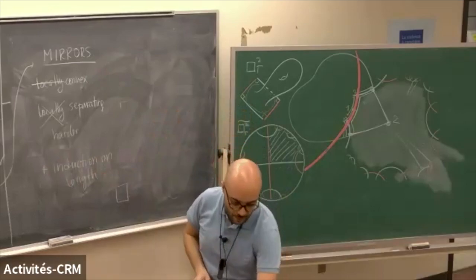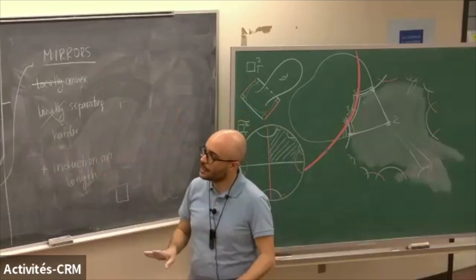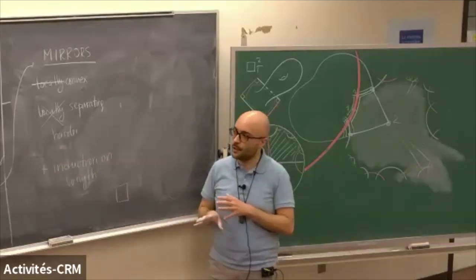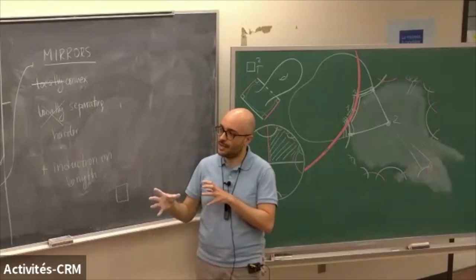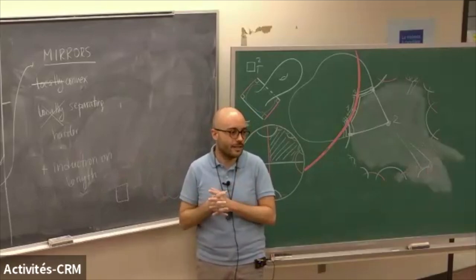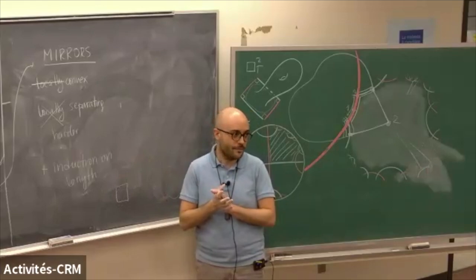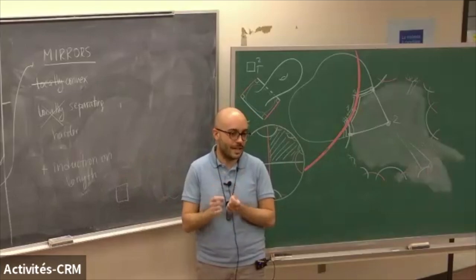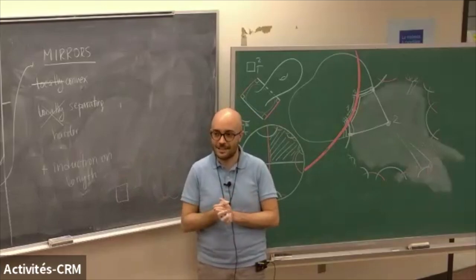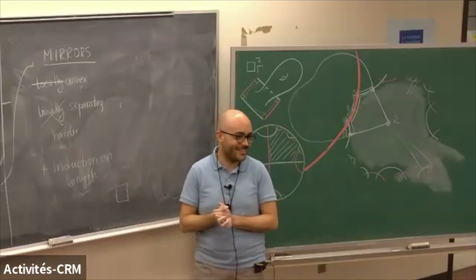We also have a relative version of this result, rearranging the same ideas to get an action of a relatively hyperbolic group on a cubical complex — not relatively geometric in the sense Daniel described Monday, but decent enough that one can apply results of Daniel and Jason to get residual finiteness, and they wrote an appendix for our paper.